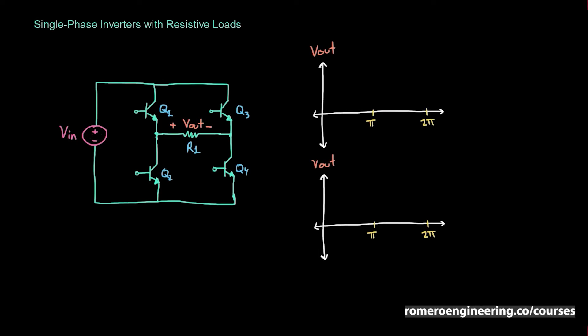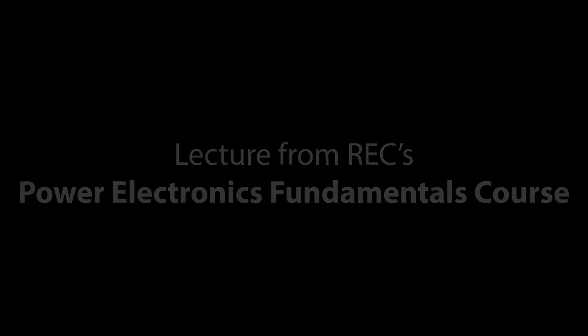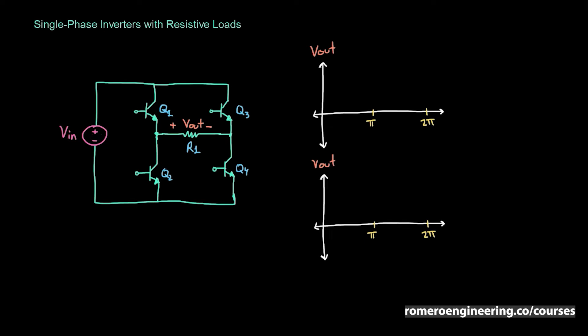In this lecture we're going to be talking about single-phase inverters with resistive loads. I've drawn the circuit for this inverter here on the left. We have transistors Q1 through Q4, the input voltage, and a resistive load at the output. This is the simplest type of inverter because not only is it single-phase but the load is also only resistive.